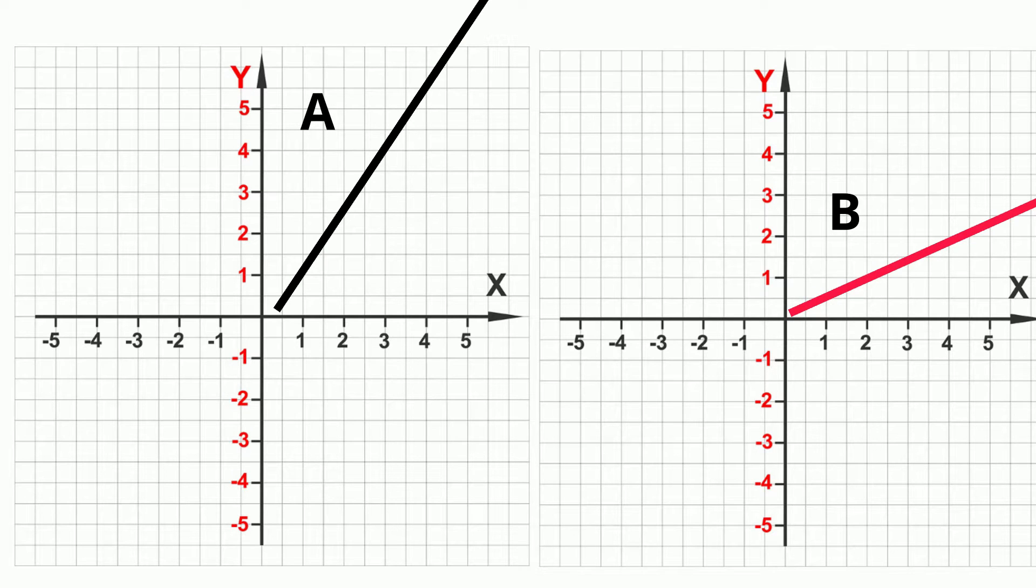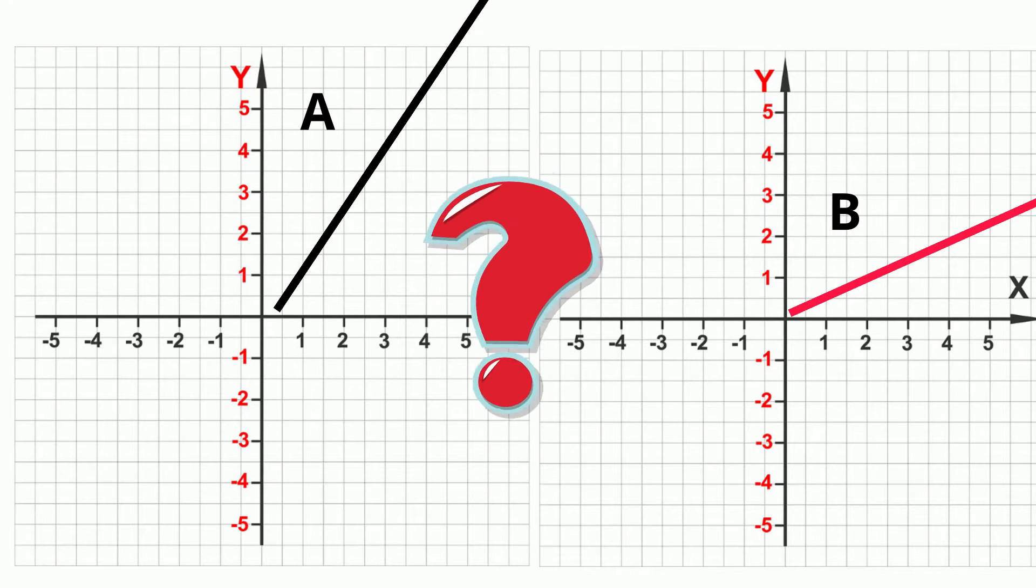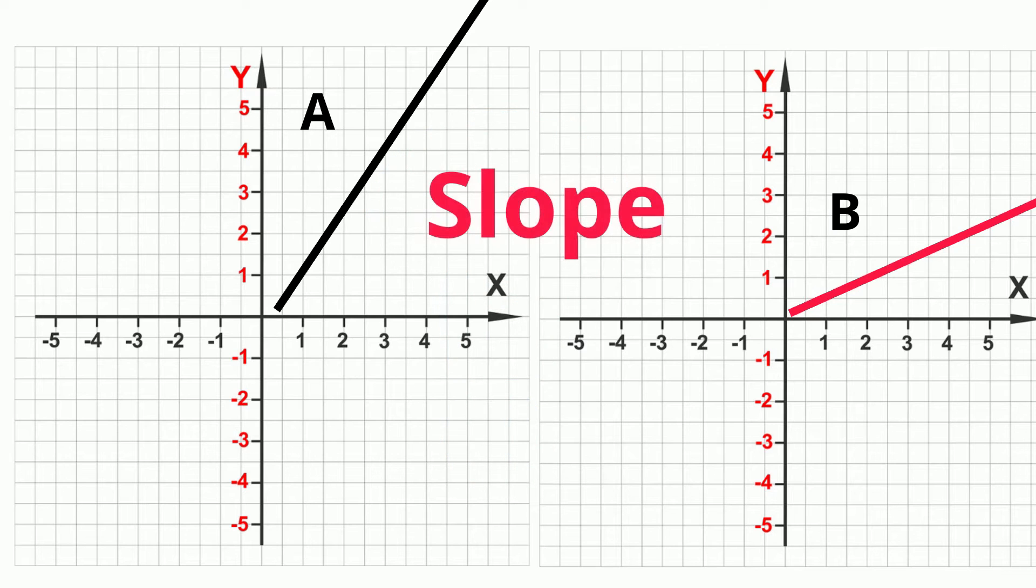If you have two lines, how could you describe that one line is more steep than the other line? You could use slope. Slope is the measure of the steepness of a line.